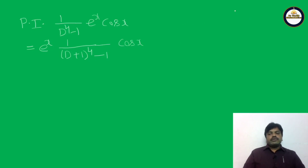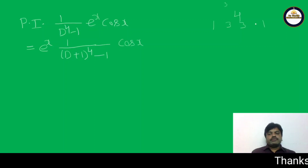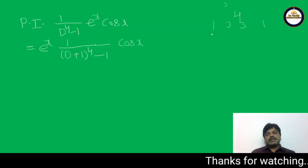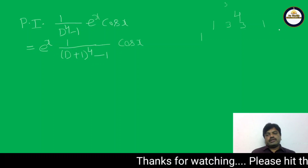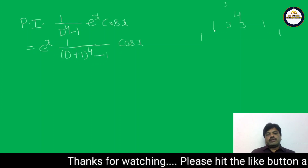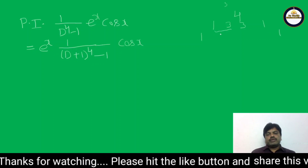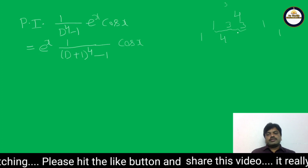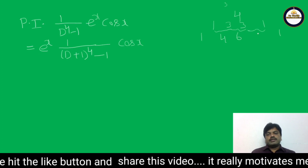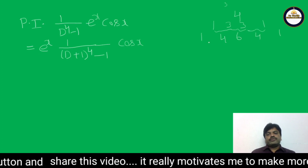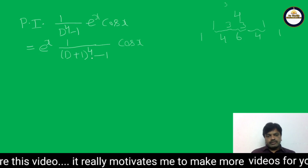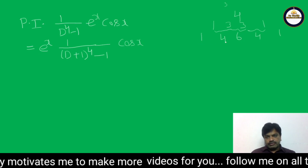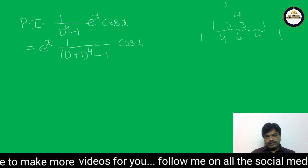Now expand (D+1)⁴ using Pascal's triangle. For power 4, the coefficients are 1, 4, 6, 4, 1. So (D+1)⁴ = D⁴ + 4D³ + 6D² + 4D + 1. Therefore (D+1)⁴ - 1 = D⁴ + 4D³ + 6D² + 4D + 1 - 1 = D⁴ + 4D³ + 6D² + 4D.